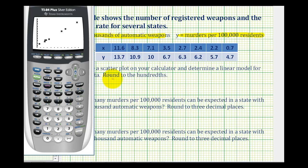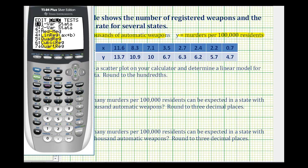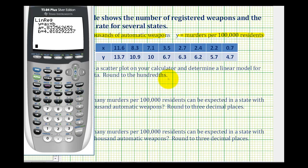Now we'll determine the line of best fit. We'll press STAT, right arrow, and select option four for linear regression, where a is the slope and b is the y-intercept. We'll press ENTER and then ENTER again. Rounding to the hundredths, we get a slope of 0.83 and a y-intercept of 4.02.